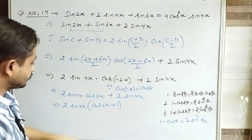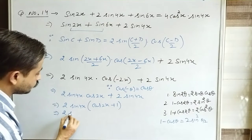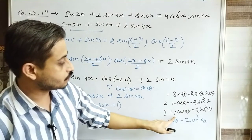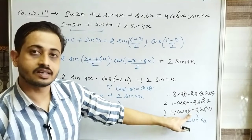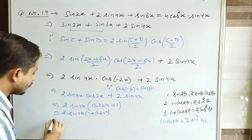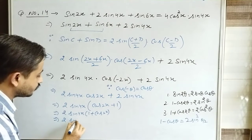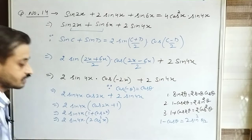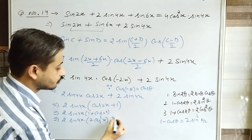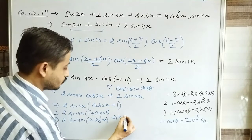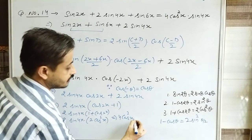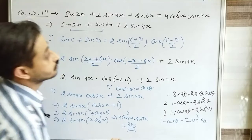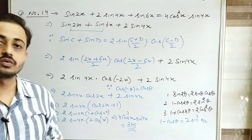So 1 + cos2x can be written using the third identity as 2cos²x (where θ = x). Therefore 2sin4x · (1 + cos2x) = 2sin4x · 2cos²x = 4cos²x · sin4x. This is your right hand side. Hence proved.